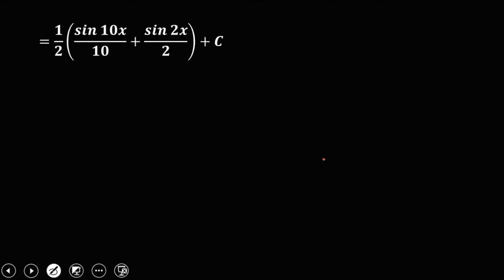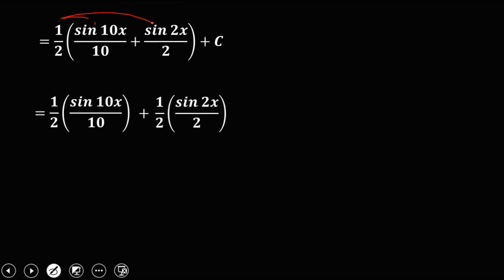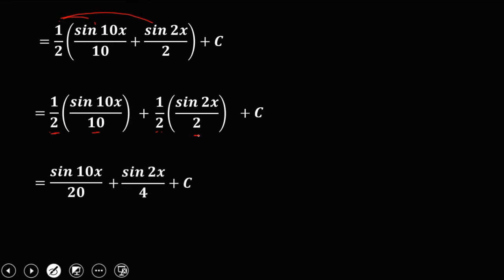Distributing the 1 half to every term, we have 1 half times sine 10x over 10, plus 1 half times sine 2x over 2, then plus c. Simplifying by multiplying the denominators: 2 times 10 is 20, and 2 times 2 is 4. So the final answer is sine 10x over 20 plus sine 2x over 4 plus c.